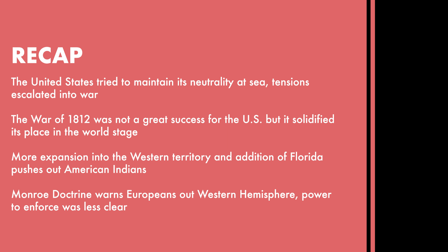In recap: the United States tried to maintain its neutrality at sea, but tensions escalated into the War of 1812 — not a great success, but it solidified America's place on the world stage, showed it could stand up to Great Britain, and generated a great deal of nationalism. There was further expansion into western territory, addition of Florida, displacement of American Indians, and finally the Monroe Doctrine warned Europeans to stay out of the Western Hemisphere, with the U.S. relying on Great Britain as an ally to help enforce it.